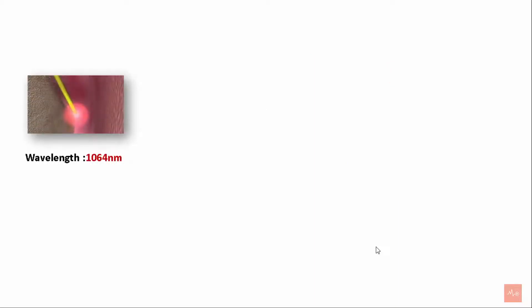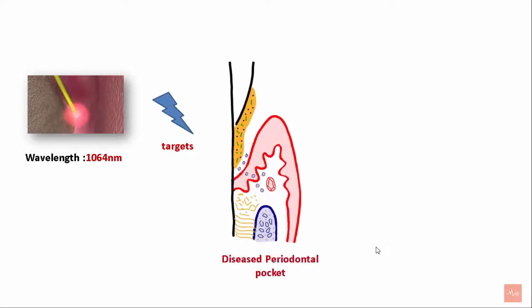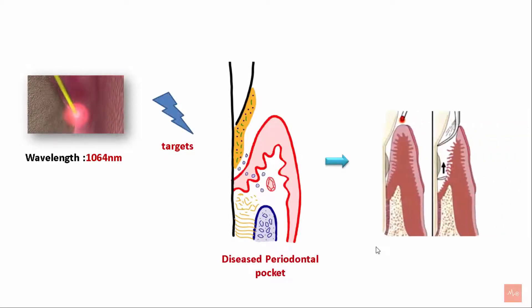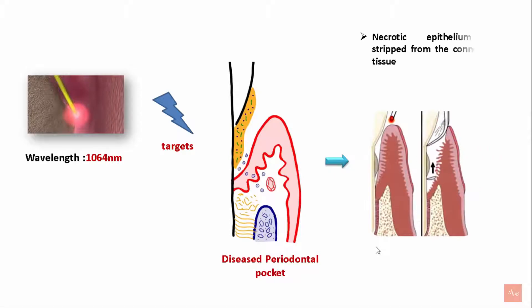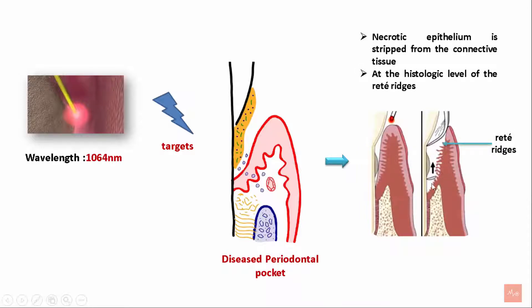LENAP involves use of a laser with a wavelength of 1064 nanometers that targets the diseased periodontal pocket. This is followed by removal of the necrotic epithelium, which is stripped from the connective tissue at the level of the rete ridges. The connective tissue is spared in the process, and this allows healing by regeneration.